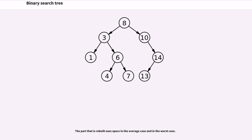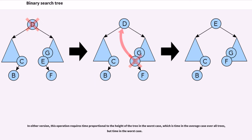The part that is rebuilt uses space in the average case and in the worst case. In either version, this operation requires time proportional to the height of the tree in the worst case, which is time in the average case over all trees but time in the worst case.